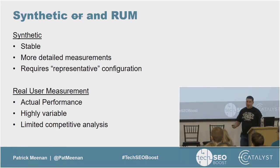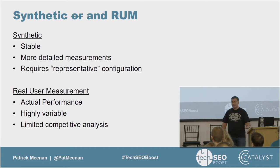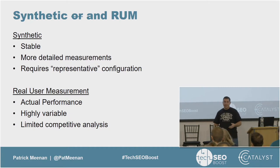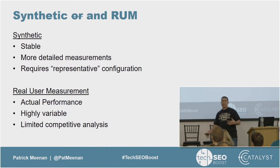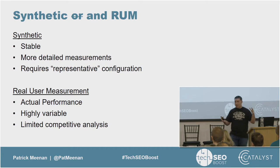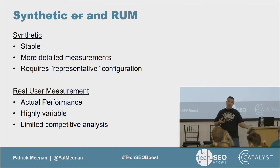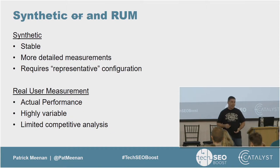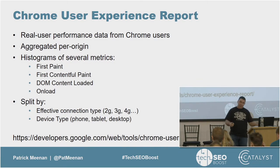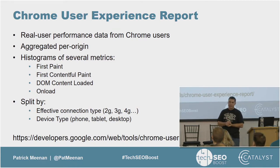When trending performance and looking for variations, lab data and synthetic testing tend to work better. If you want to understand what users are seeing and get a baseline, look at your real user data. You need both — you can't get by with one without the other. Historically if you want to compare yourself against a competitor — Amazon versus Walmart — you can only do that with synthetic testing. You can run your site against competitors and set benchmarks.